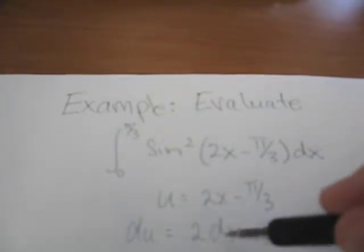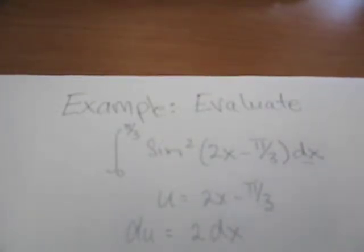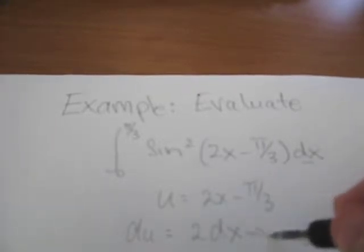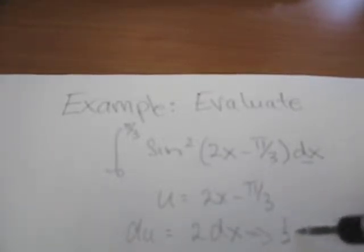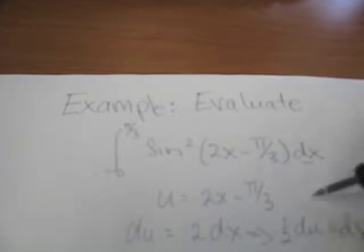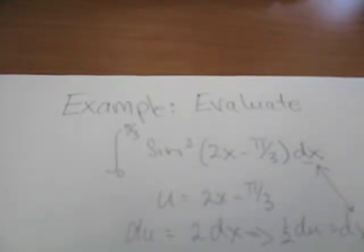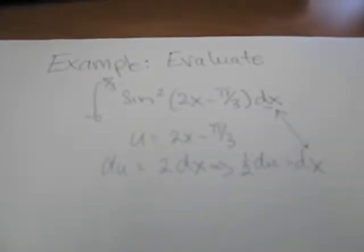Now, this is looking very much like this term up here, dx. And so this would imply then that a half du is equal to dx. And so we straight away have a substitution for dx.